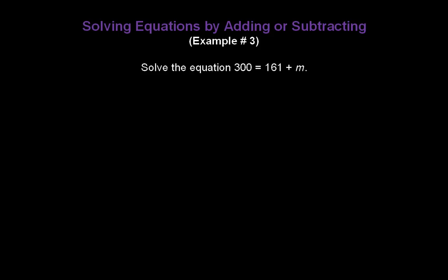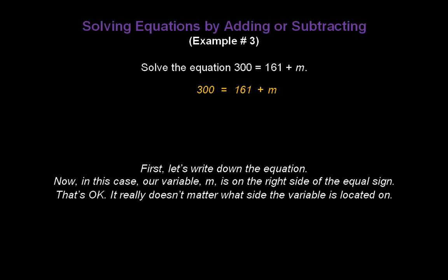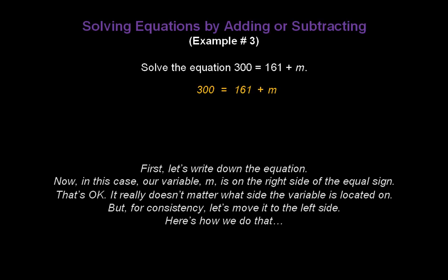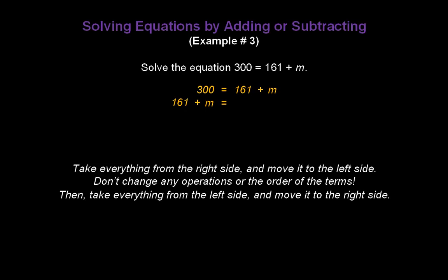Let's solve the equation 300 equals 161 plus M. Write down the equation: 300 equals 161 plus M. In this case, our variable M is on the right side of the equal sign. That's okay — it doesn't matter what side the variable is on. But for consistency, let's move it to the left side. Take everything from the right side and move it to the left, and take everything from the left side and move it to the right — don't change any operations or the order of terms. So now we have 161 plus M equals 300, and we're ready to solve for M with M on the left-hand side.